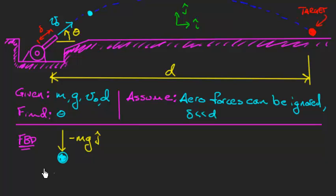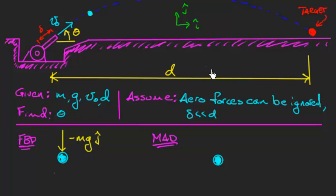Only forces go on the free body diagram — things that are pushing and pulling on the object. Velocity is not something pushing or pulling; it's something the object has. Velocity has completely different units than force: velocity is length per time, force is mass times length per time squared. So velocity does not belong on the free body diagram. From my free body diagram, I get just the one force: the weight of gravity. Next, I draw the mass acceleration diagram, putting acceleration in the positive j-hat direction, and also a horizontal component just in case.